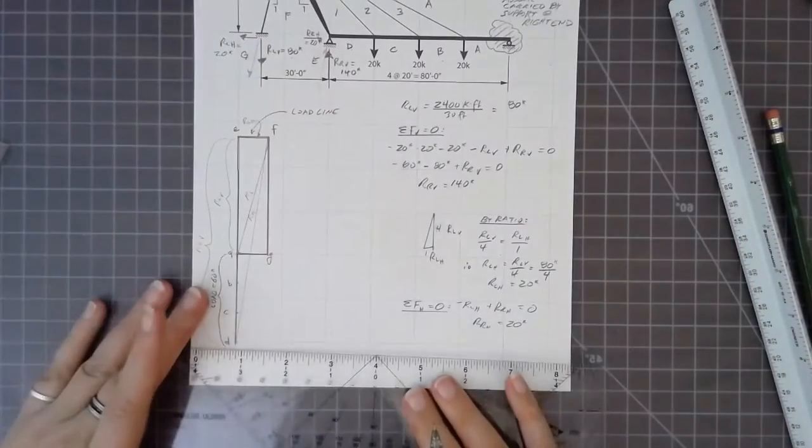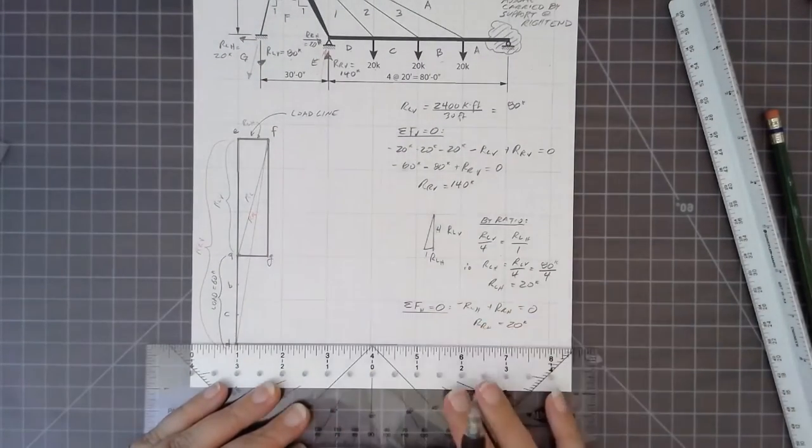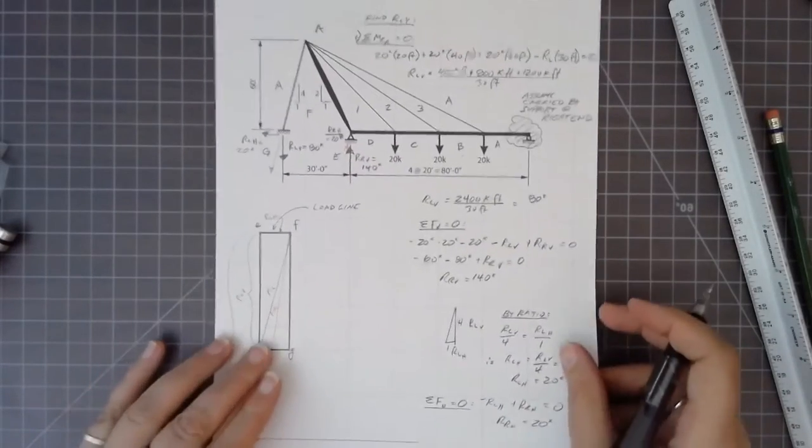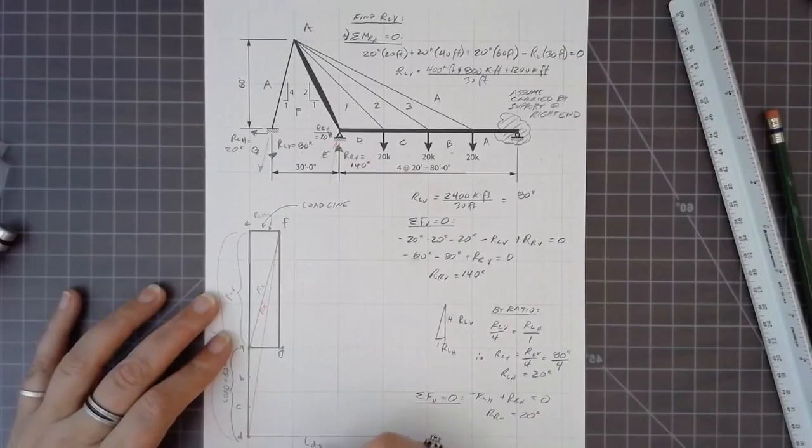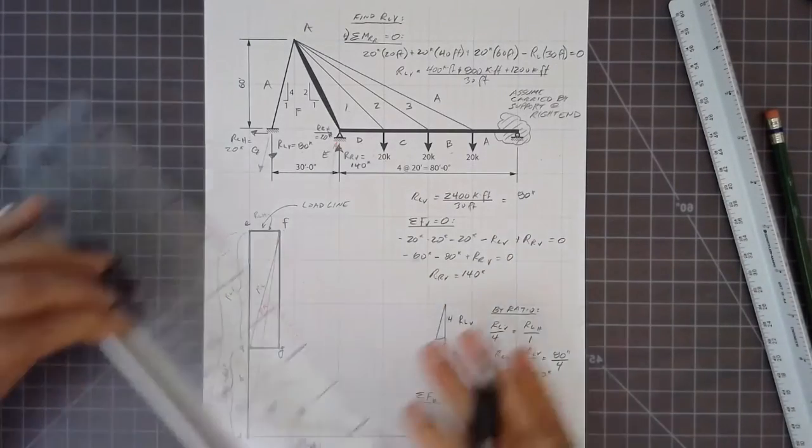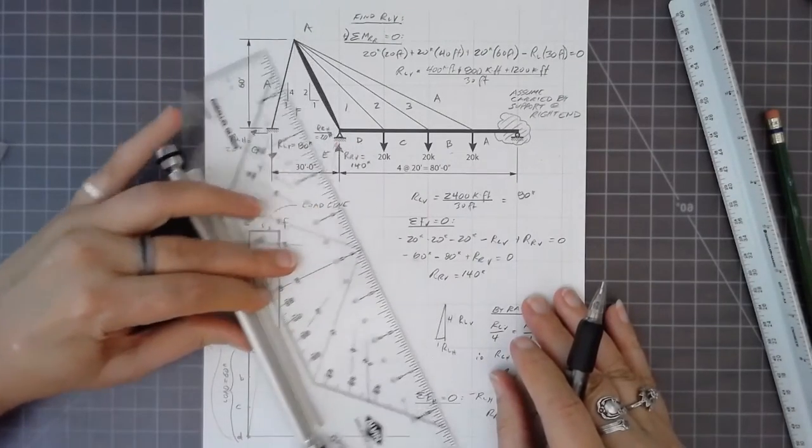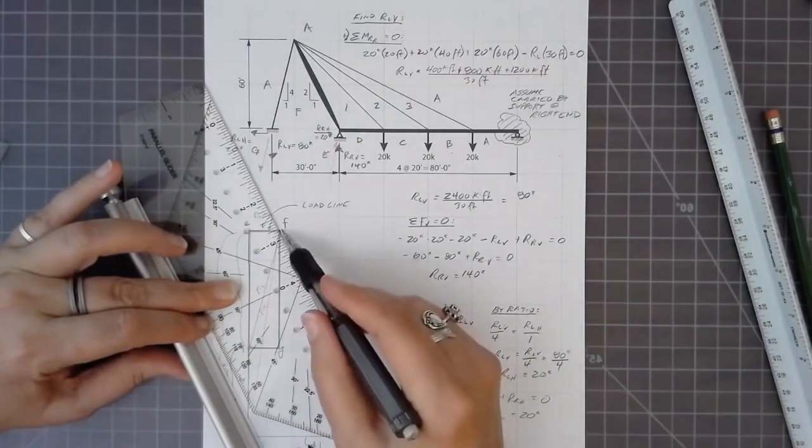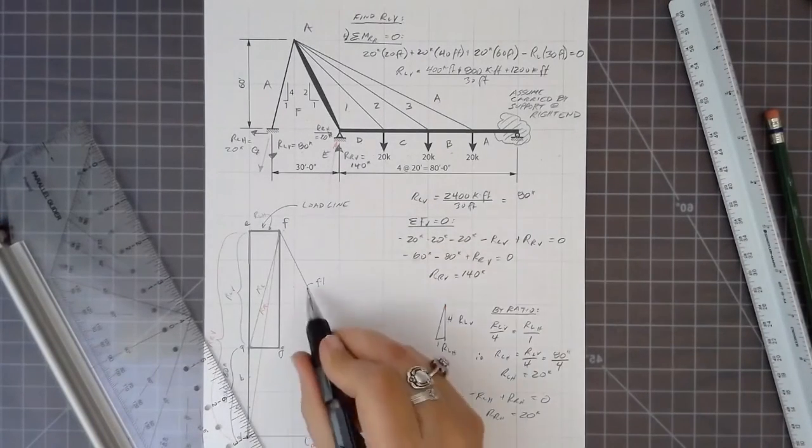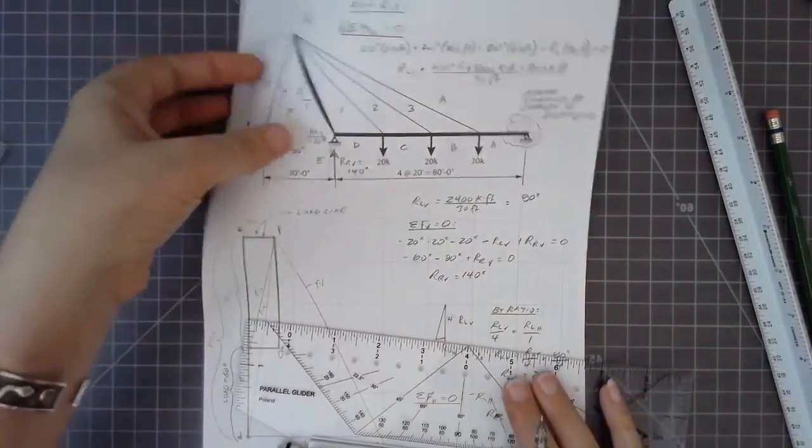So we have the horizontal line D1 intersecting the sloping line of F1. We get the slope from the form diagram. Starting at F, projecting down, that's line F1. So point 1 lies at the intersection of D1 and F1.